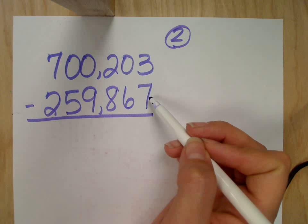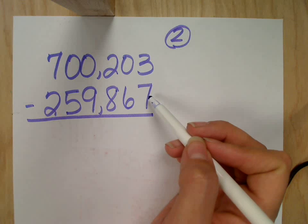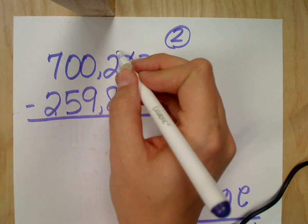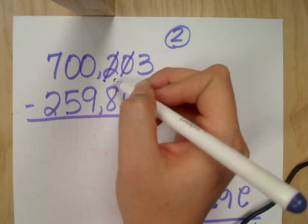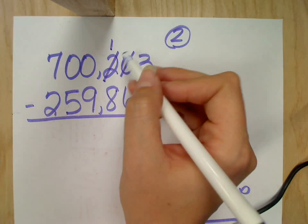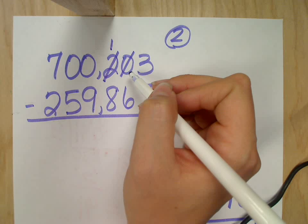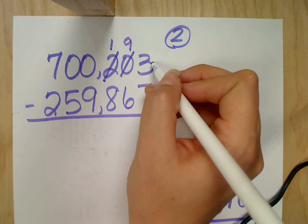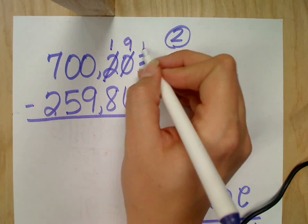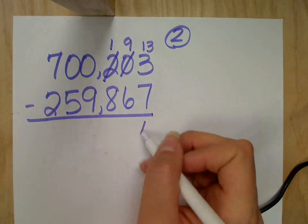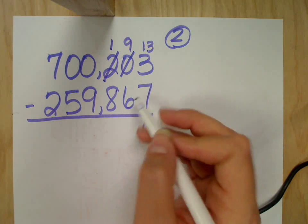Can I do three take away seven? No, so I have to borrow. I don't have any to borrow from that zero, so I have to go to this two. I take one away from the two to make it a one. What happens to this zero? A nine. The only one that gets the full value is this three right here that becomes 13. Thirteen take away seven? Six. Nine take away six? Three.